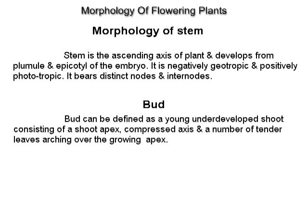Bud. A bud can be defined as a young, underdeveloped shoot consisting of a shoot apex, compressed axis and a number of tender leaves arching over the growing apex.